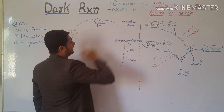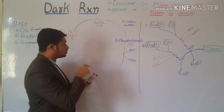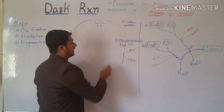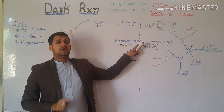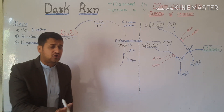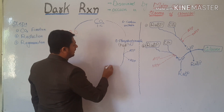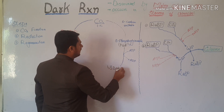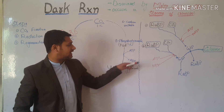Students are often confused between PGA and PGAL. The first stable molecule formed is 3-phosphoglycerate, where the phosphate is attached to carbon number 3, and this is called PGA. When ATP donates a phosphate group to PGA, this molecule is converted into 1,3-bisphosphoglycerate, which now has a second phosphate coming from ATP.